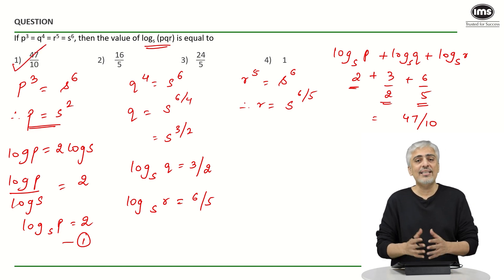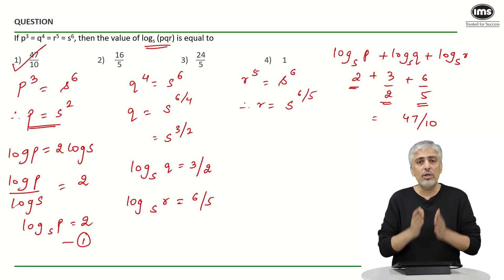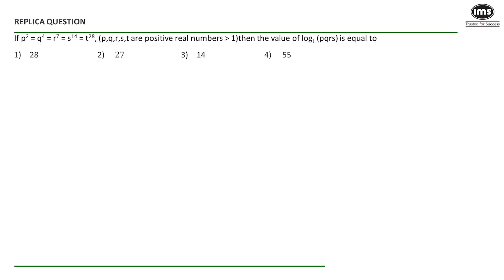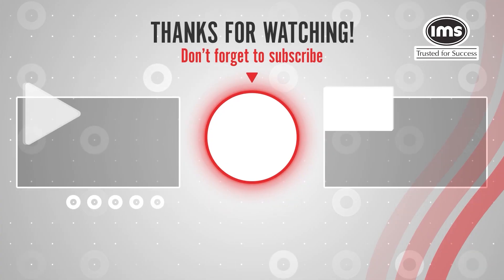So, pretty straightforward and as I said, a classic log question. You are bound to see this at least in one test in a year, definitely. So, if you are not looking only at CAT and looking at all the other tests, I would say that somewhere or the other, you will see this question. Well, as usual, please solve the replica question and give your answers in the comment box. Thank you very much.